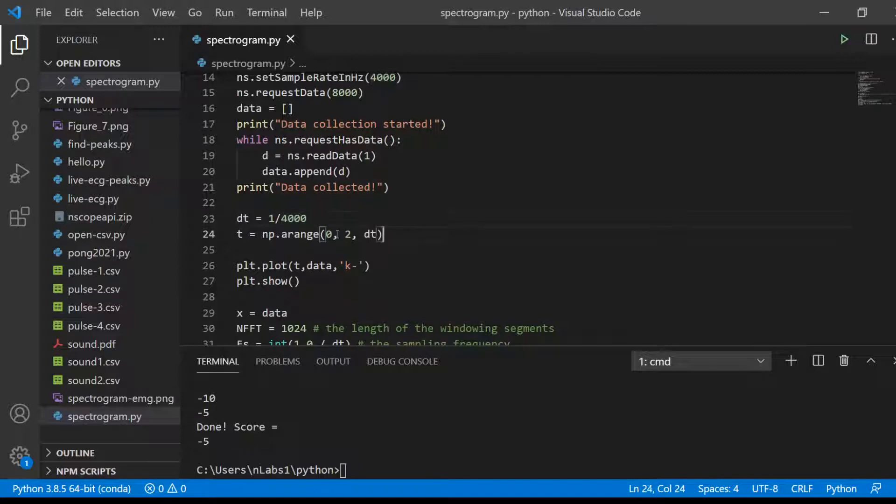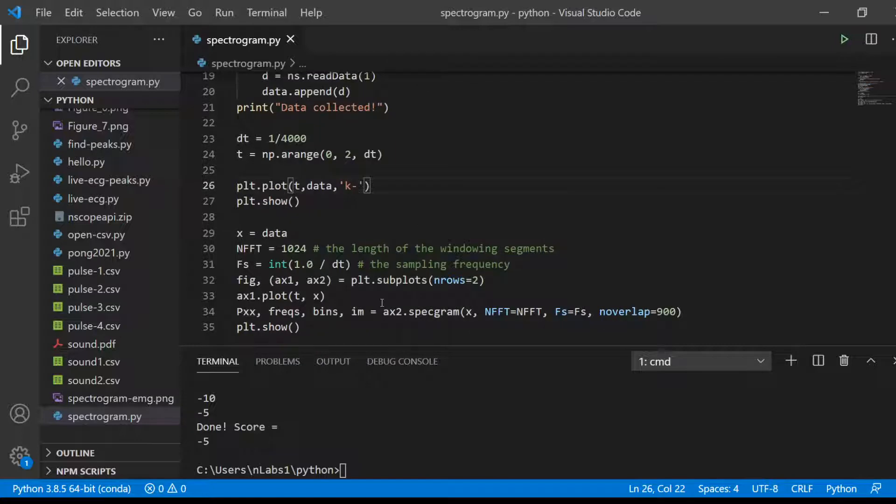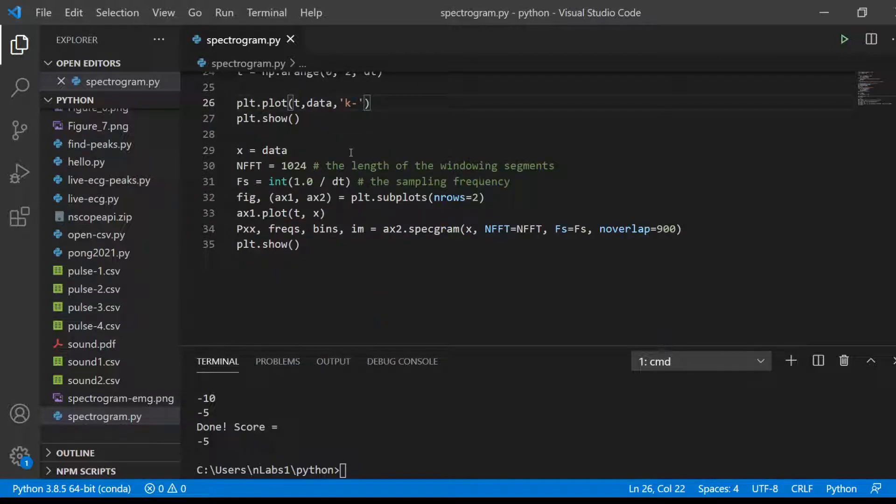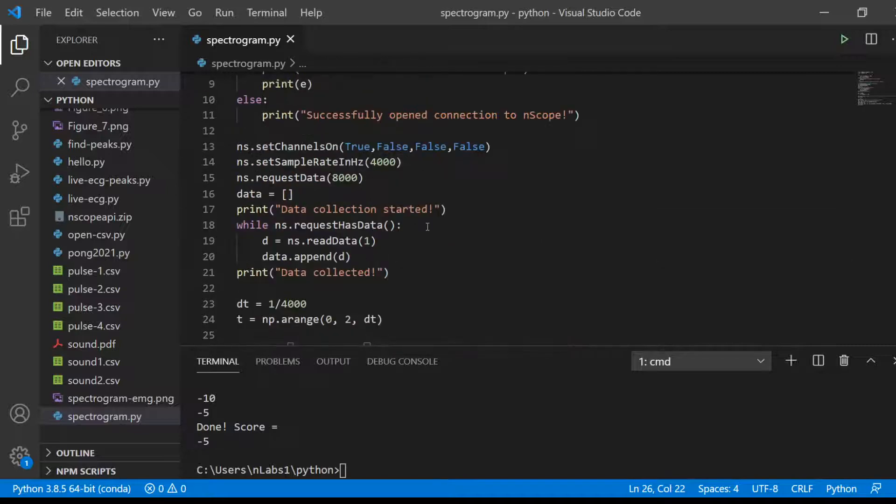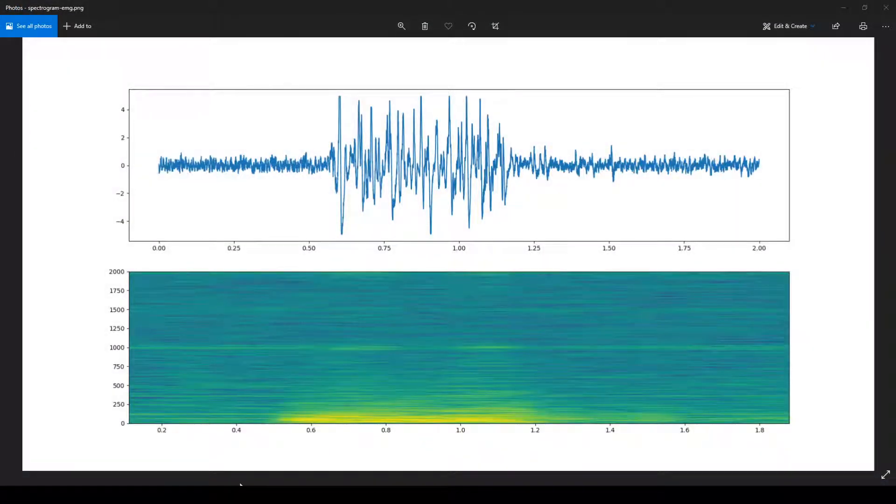Then I'm going to make a time array, assuming that the data was collected at four kilohertz. I'm going to plot it. And then I'm going to do a spectrogram. The top is my voltage versus time. We can see the mean is zero. I've got some white noise, essentially. And then when I flex, the signal goes up and down, doesn't quite hit plus or minus five. And when I stop flexing, it goes back to almost zero again.